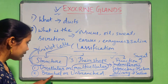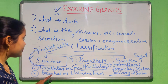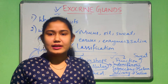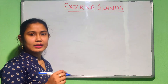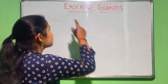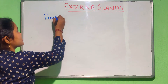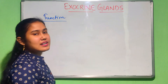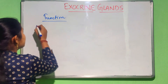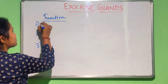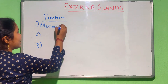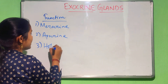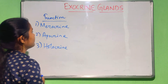In terms of structure, these glands can also be branched or unbranched and can vary in shape. Now let's study their functional classification. How do these exocrine glands release their products? Accordingly, they can be of three types: the first one is the merocrine gland, the second one is the apocrine gland, and the third one is the holocrine gland.